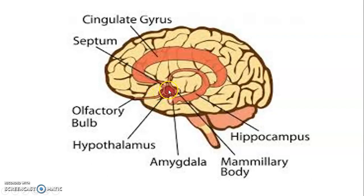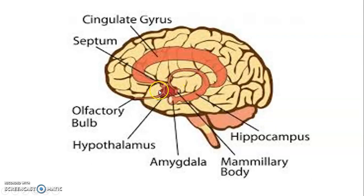Then we have the hypothalamus there, amygdala, hippocampus, and mammillary hypothalamus. Amygdala, hippocampus — that's the fornix, that's the mammillary body of the hypothalamus. This is the hypothalamus. That's the cingulate gyrus.